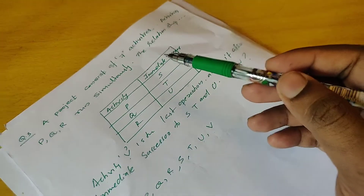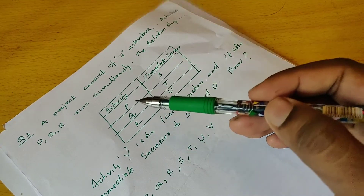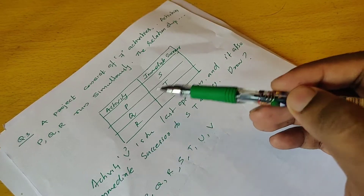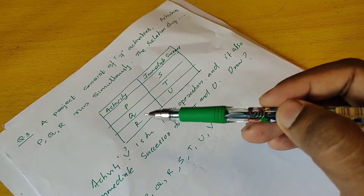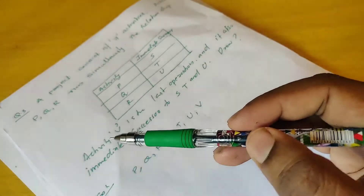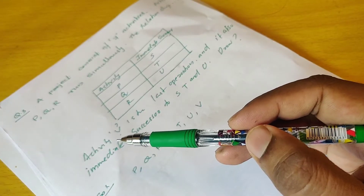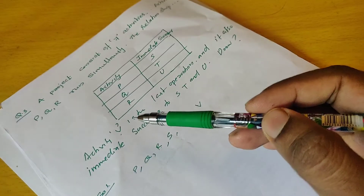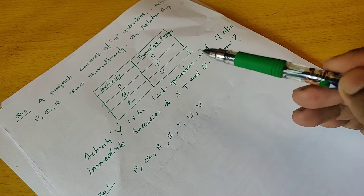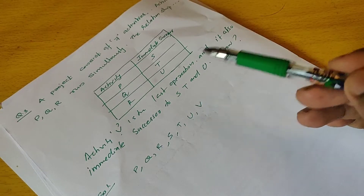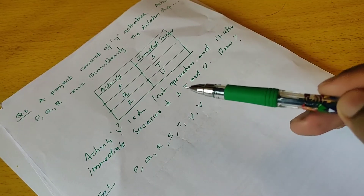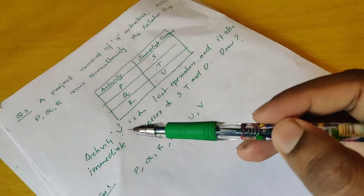The successors of q are identified. Activity v is the last operation of the project, and it is also the immediate successor to s, t, u, and v.